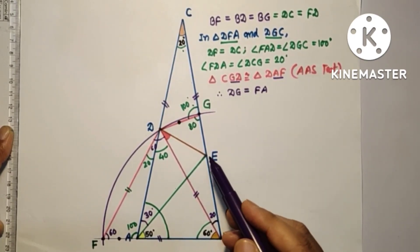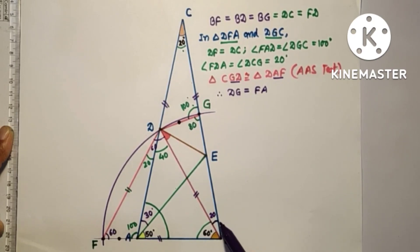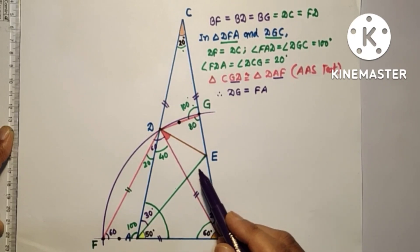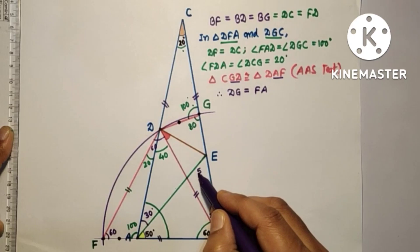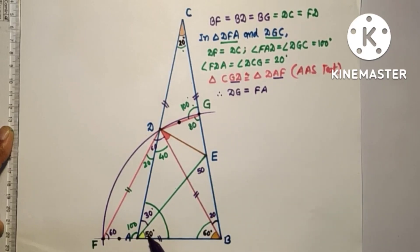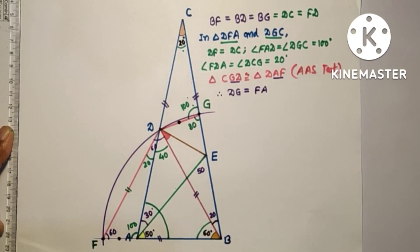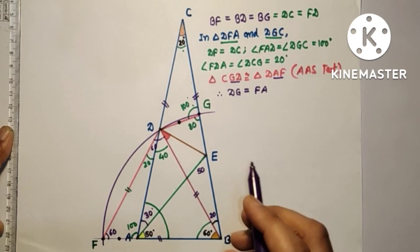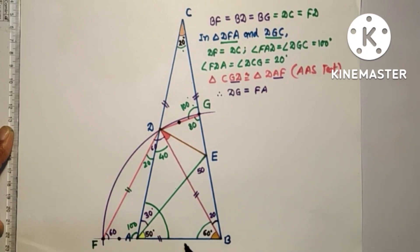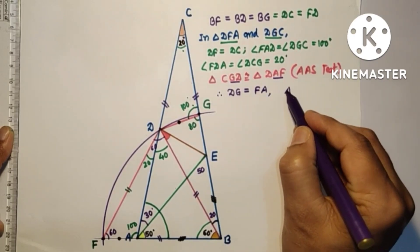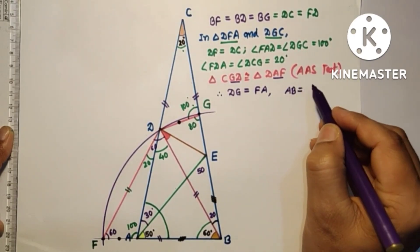Now in triangle EAB: angle ABE is 80 degrees and angle BAE is 50 degrees, so the third angle AEB equals 180 minus 130, which is 50 degrees. Since angle BAE equals angle AEB equals 50 degrees, triangle ABE is isosceles with AB equal to BE.